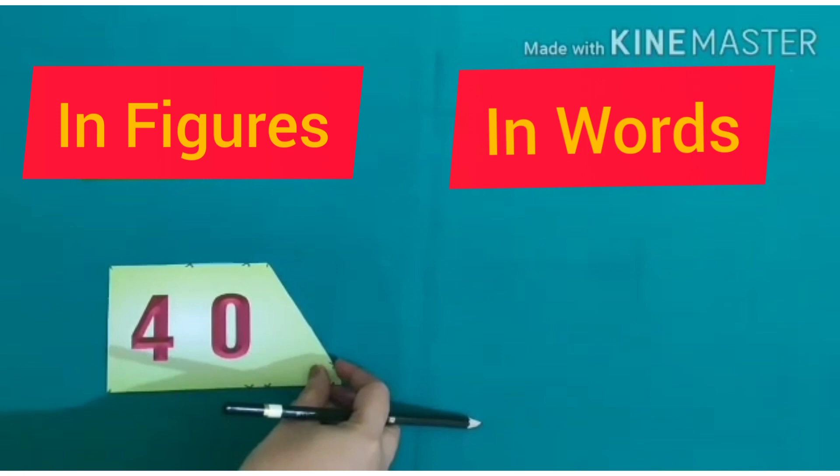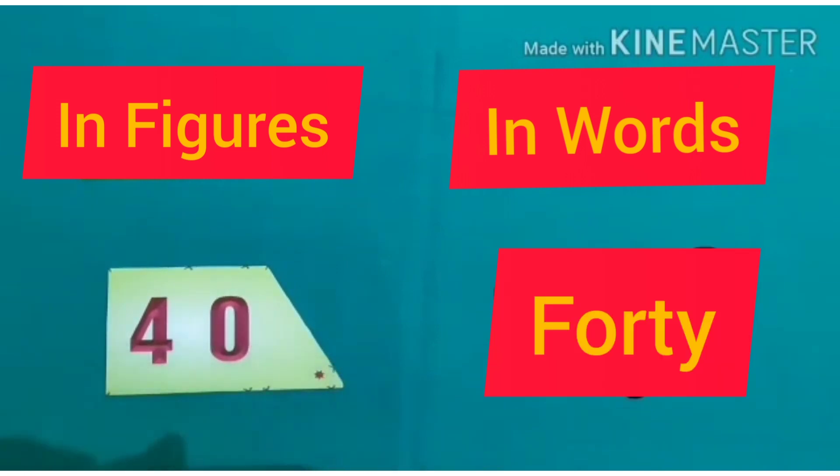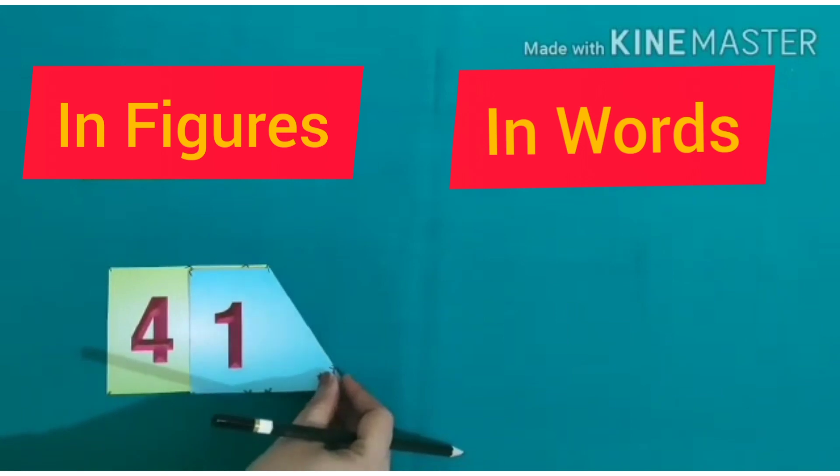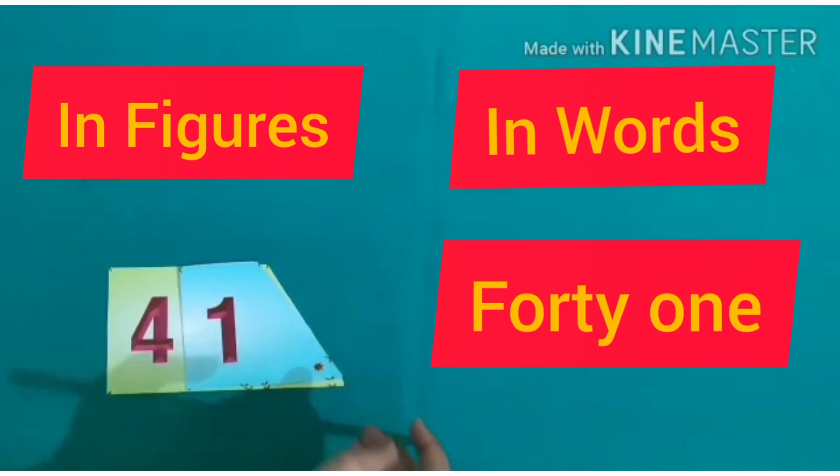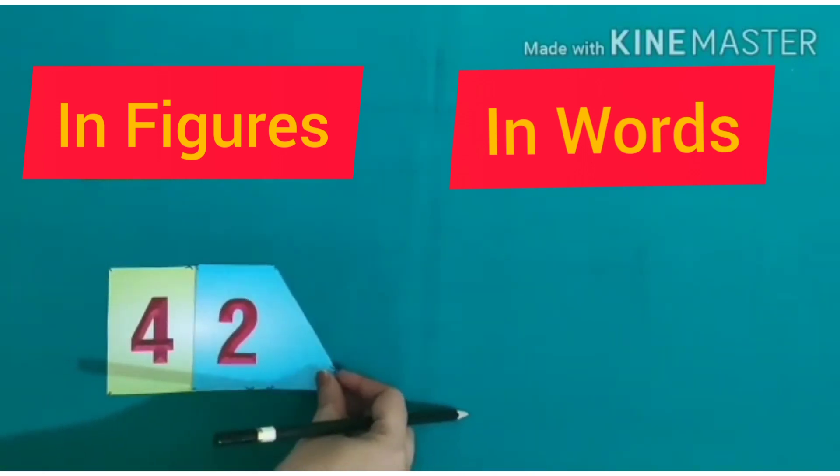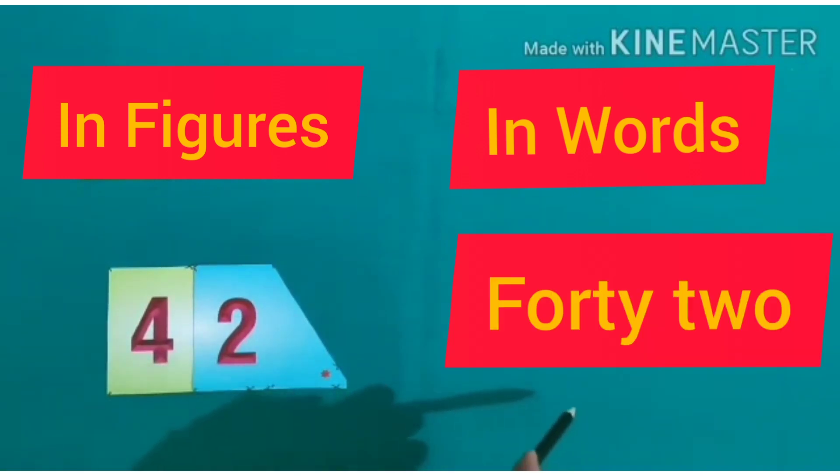Our first number is 40 and in words it is forty. Our next number is 41 and in words it is forty-one. Next number is 42 and in words it is forty-two.